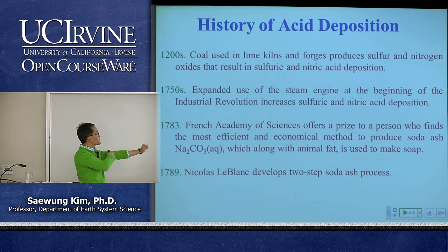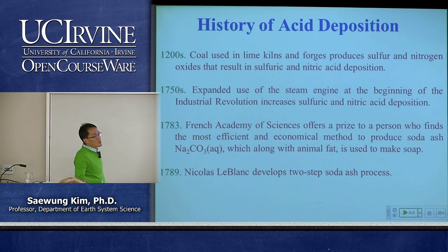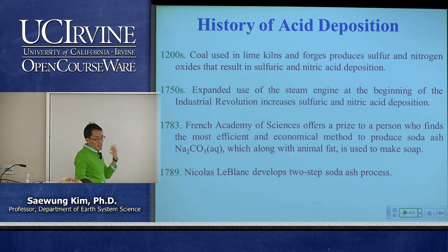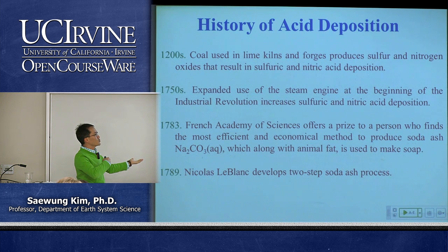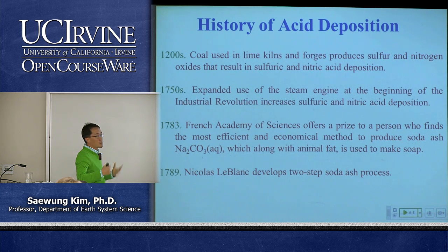Now let's move to acid rain — more properly called acid deposition. Rain is just one event; fog and snow can also be acidic and affect ground ecosystems. We use the term 'acid deposition' as a comprehensive term for anything coming from the sky that has been acidified by human pollution.